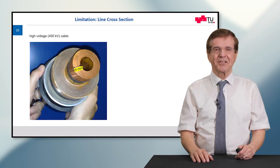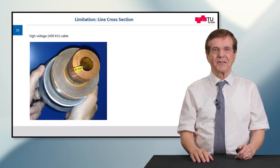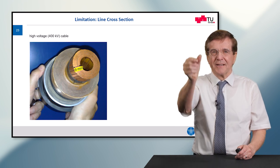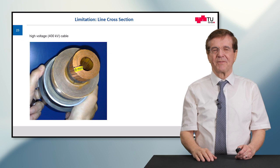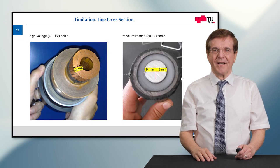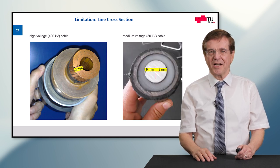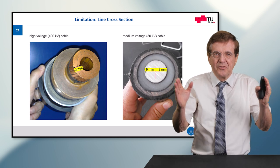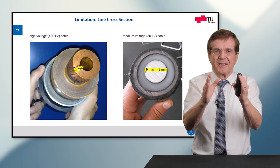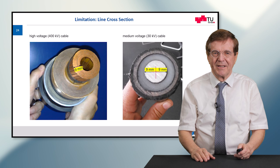Here you can see a typical application for a 400 kV cable. You see the active core of the cable is limited to a thickness of something like nine millimeters. And when we come to a medium voltage cable, we can see these two nine millimeters are compressed together, give a diameter of something like 18 millimeters.